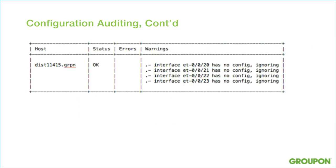Here's an example of how it looks when it's all good — state is okay. This is a spine of our clos fabric. No errors, only warnings that some interfaces have no config, and that's okay in this case because this spine did not connect to so many leaves.